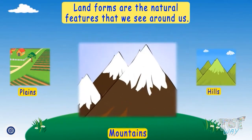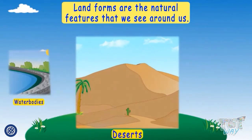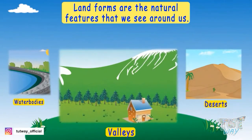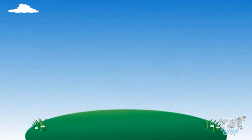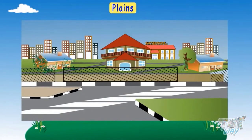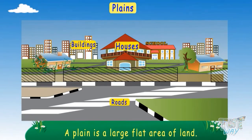Now let's learn about different types of landforms one by one. Plains: a plain is a large flat area of land. Houses, buildings, and roads can be easily built on plains.